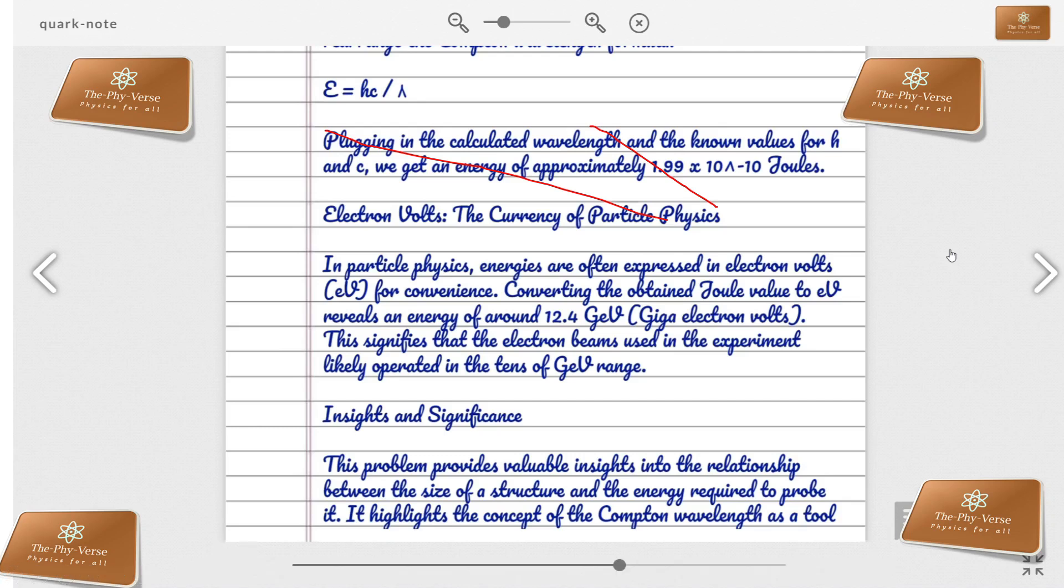In particle physics, energies are often expressed in electron volts. If you calculate it, you will get energy in the range of 12.4 GeV, that is, tens of giga electron volts. This problem provides valuable insights into the relationship between the size of a structure and the energy required to probe it. It highlights the concept of wavelength as a tool.